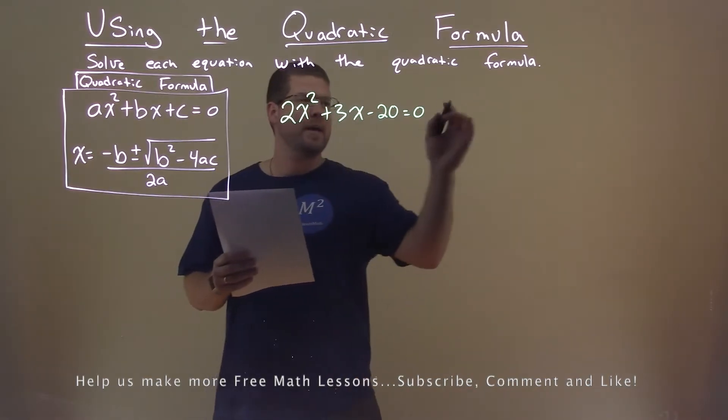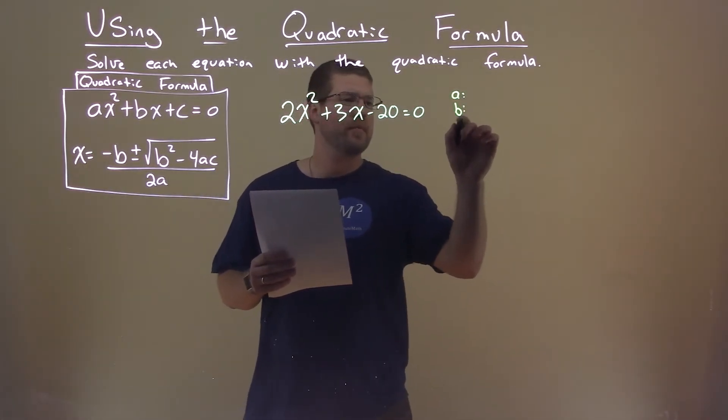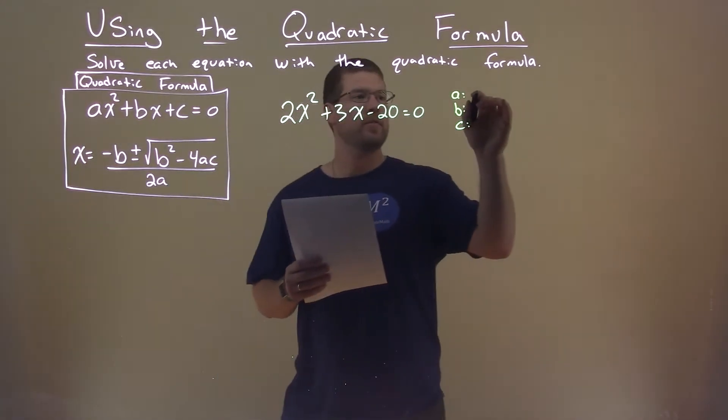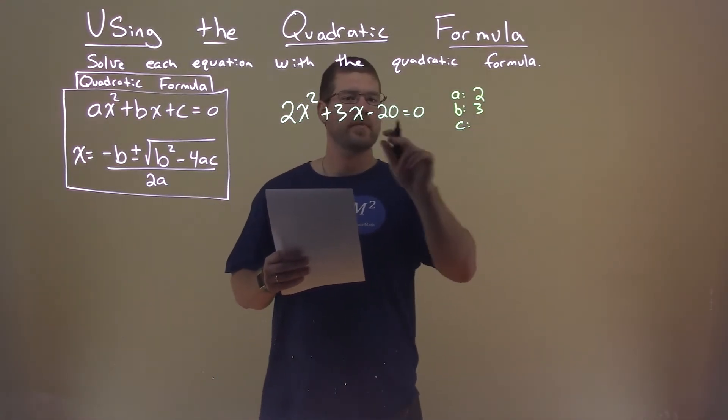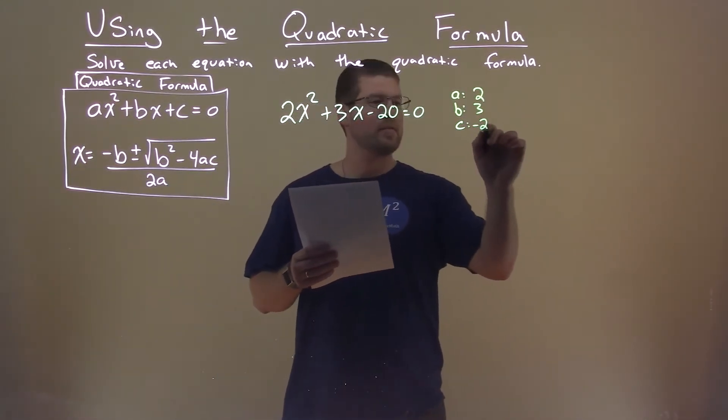What I want to do is find my a, b, and c values. The a value is 2, b value is 3, and c value is -20.